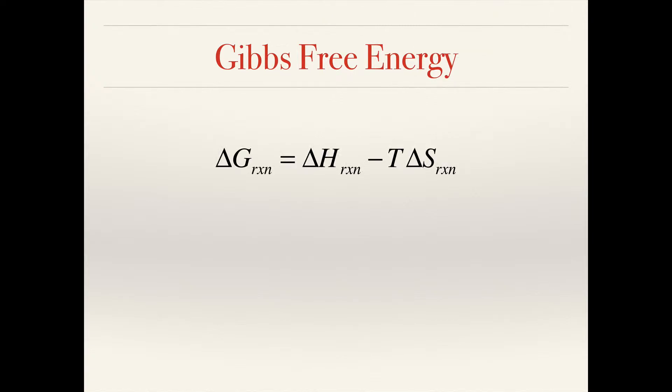Let's take a look at the Gibbs free energy and the role that temperature plays in spontaneity. We know that ΔG is equal to ΔH minus TΔS, and also that this is negative for spontaneous processes and positive for non-spontaneous ones. There are four possible permutations for the signs of ΔH and ΔS, and I want to go through each one of those cases.